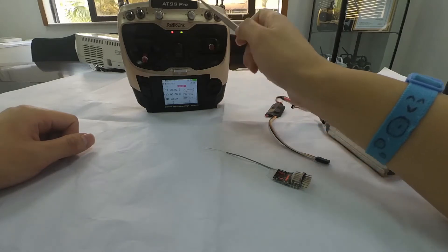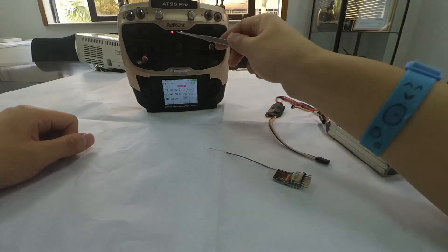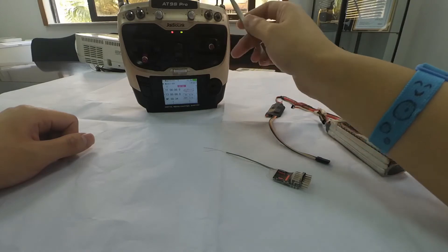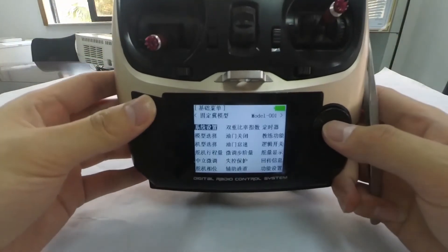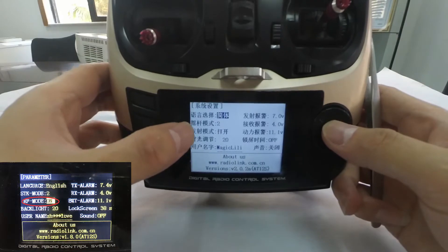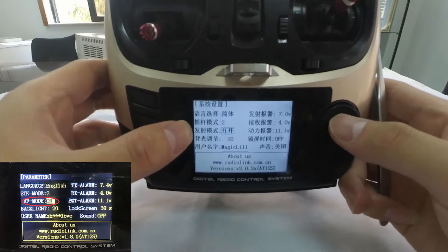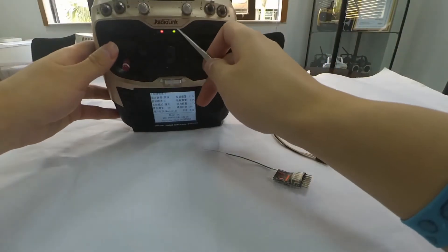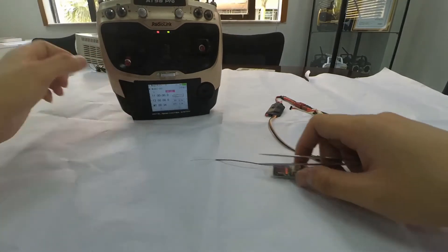If yes, then we can process the binding directly. If the green one is not on, enter parameter and turn on the RF mode. Then the LED will be always on and the transmitter is ready to bind.